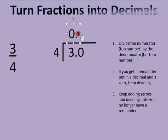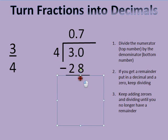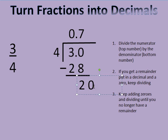So four goes into thirty seven times. Okay, and seven times four is twenty-eight. So when I do my subtraction problem now, my remainder is going to be two. You might think, well, where's the zero coming from? Let's get rid of that right now.